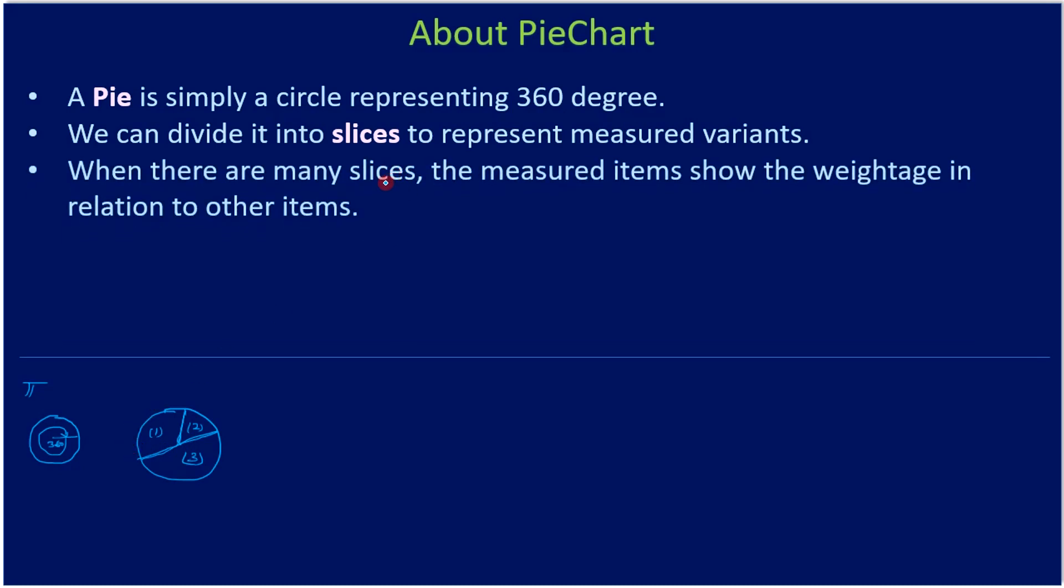When there are many slices, the measured items show the weight age in relation to other items. You can see three has more weight age, maybe 50 to 60 percent, and two is very less weight age compared to three. The intermediate weight age is given to slice one. This is in relation, right? Three in relation to two is high, so it clearly shows you the weight age in relation to other items.